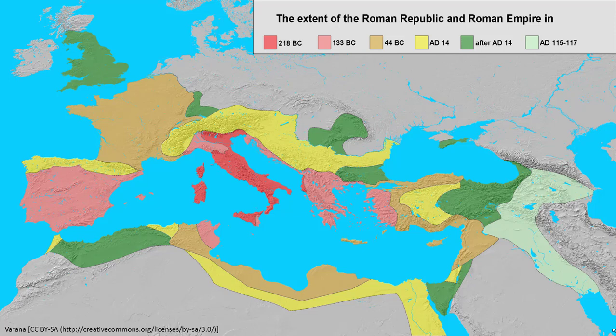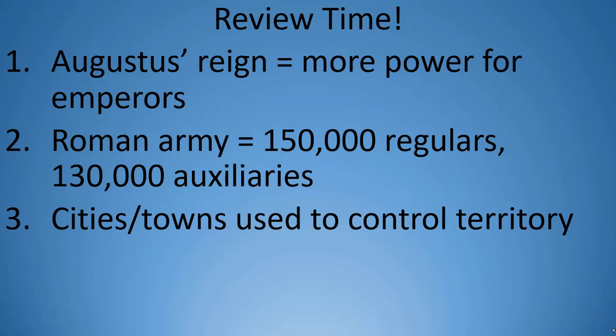Let's take a moment to review. First, the reign of Augustus marked the beginning of a pattern in which emperors steadily gained more power at the expense of others. Second, the Roman army under Augustus was composed of 150,000 regular troops and 130,000 auxiliaries. Lastly, cities and towns were the smallest political units in the empire and were used to manage large tracts of land.